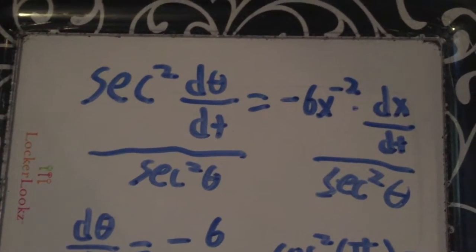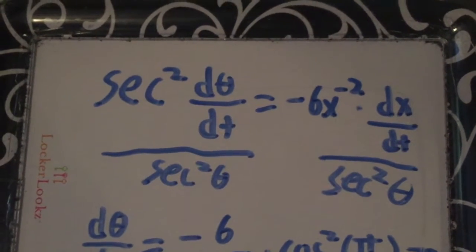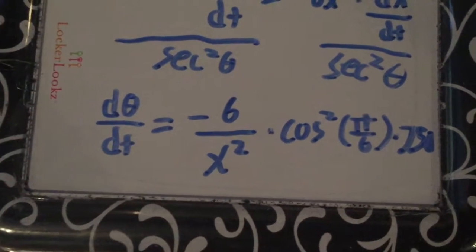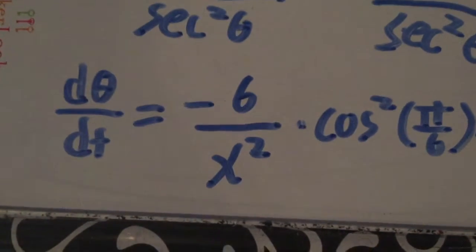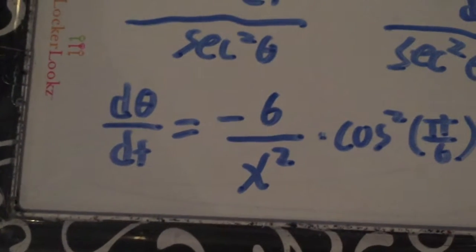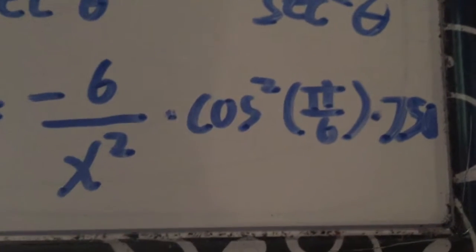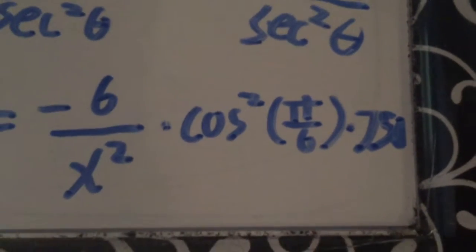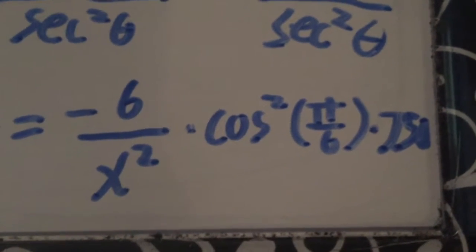We get d theta dt all by itself by dividing both sides of the equation by secant squared theta. Once d theta dt is isolated we can simplify some things. x to the negative second power can be placed in the denominator to make it positive. Secant squared theta divided on both sides becomes 1 over secant squared theta or cosine squared theta. Theta as we know is pi over 6, 30 degrees.